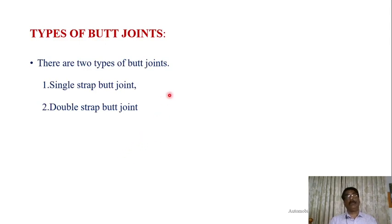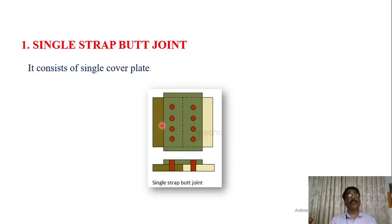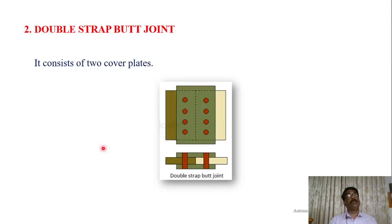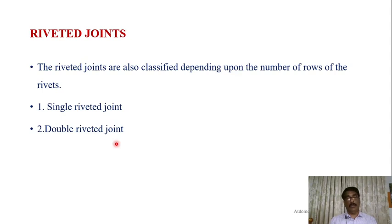Butt joints are further classified as single strap and double strap. In a single strap butt joint, only one cover plate is used. In a double strap butt joint, two cover plates are used — one above and one below. Riveting may be single riveting or double riveting. The difference is clear: single strap has one cover plate, double strap has two cover plates.